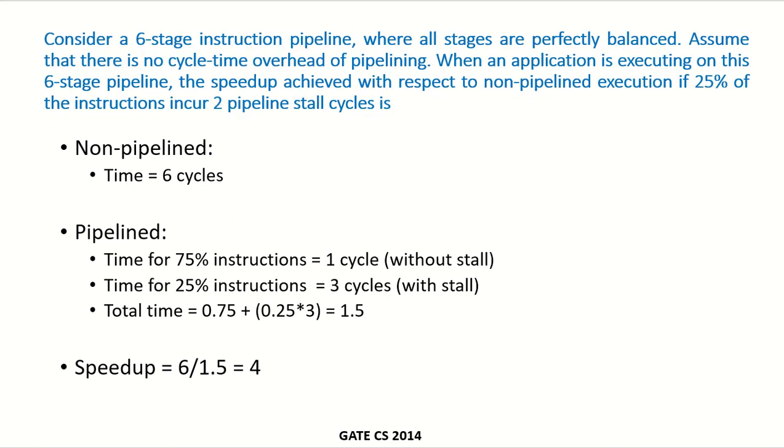Another example is consider a 6 stage instruction pipeline where all stages are perfectly balanced. Assume that there is no cycle time overhead of pipelining. When an application is executing on this 6 stage pipeline, the speedup achieved with respect to non-pipelined execution if 25% of the instructions incur a 2 pipeline stall. In a non-pipelined implementation, since it is a 6 stage instruction setup, each instruction will require 6 clock cycles.